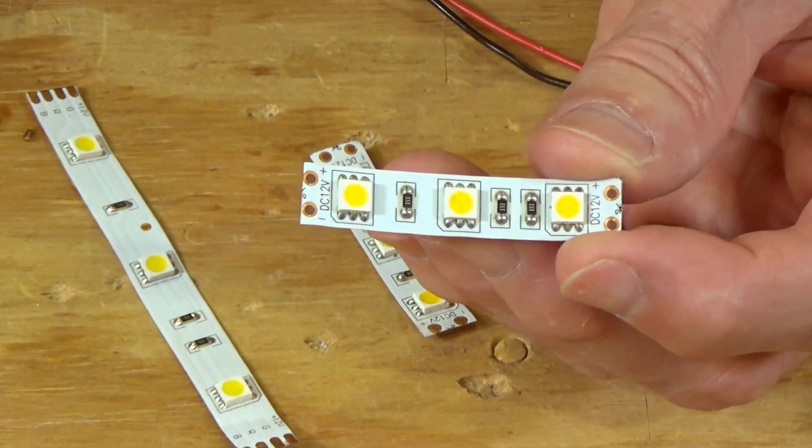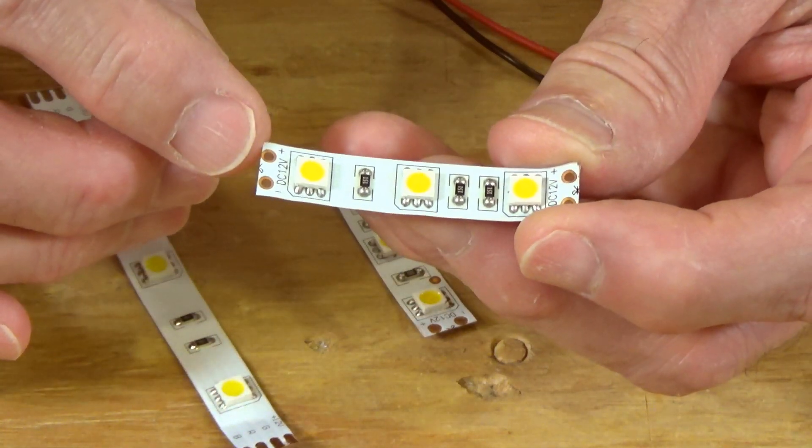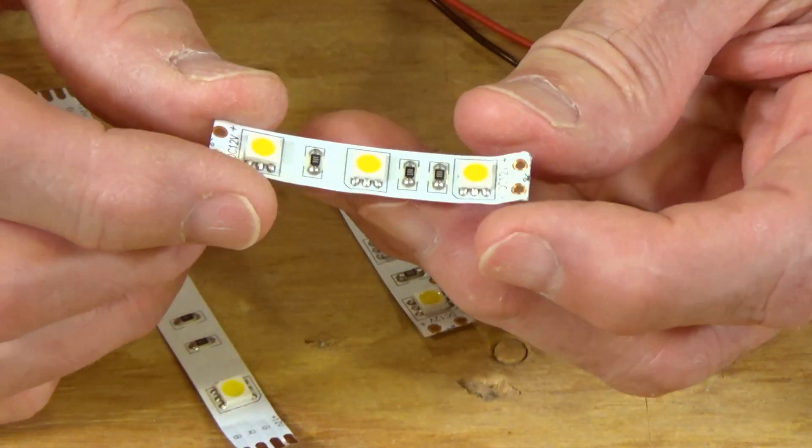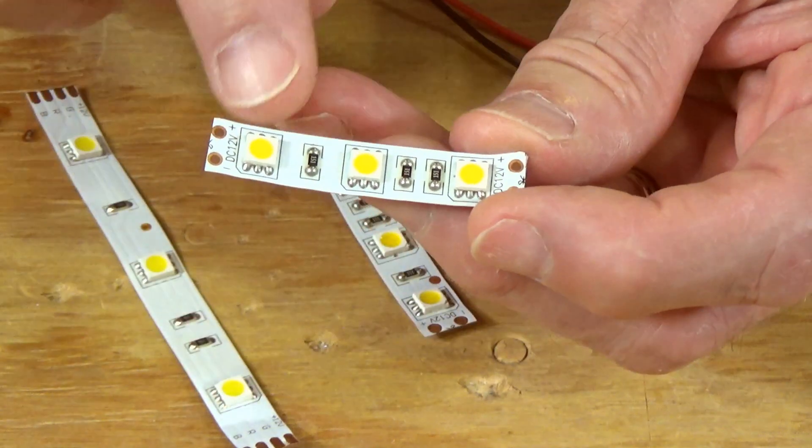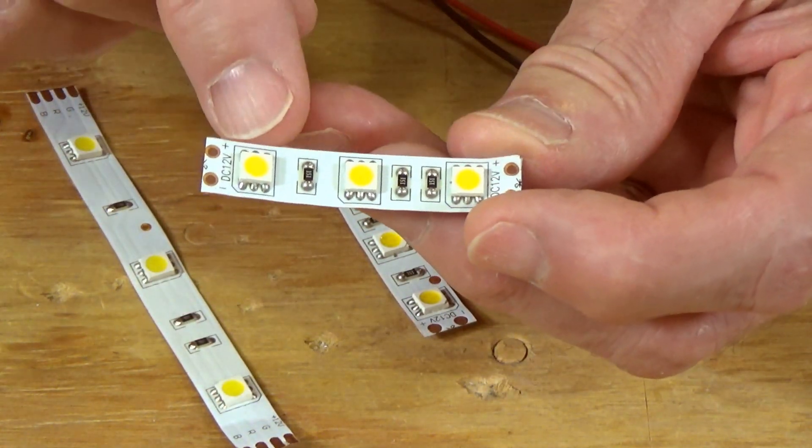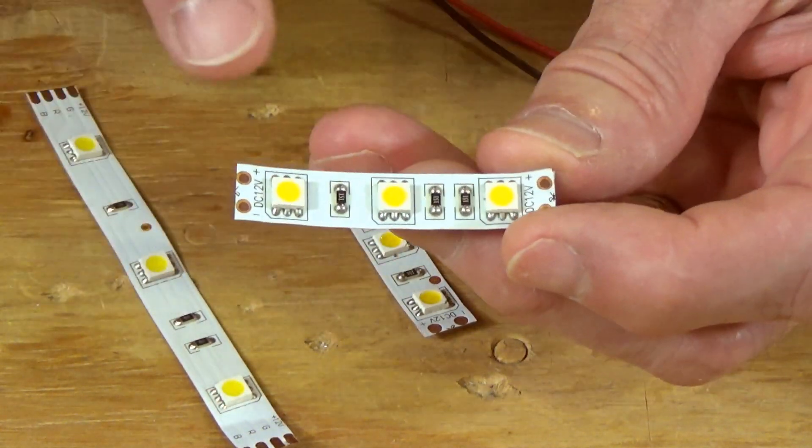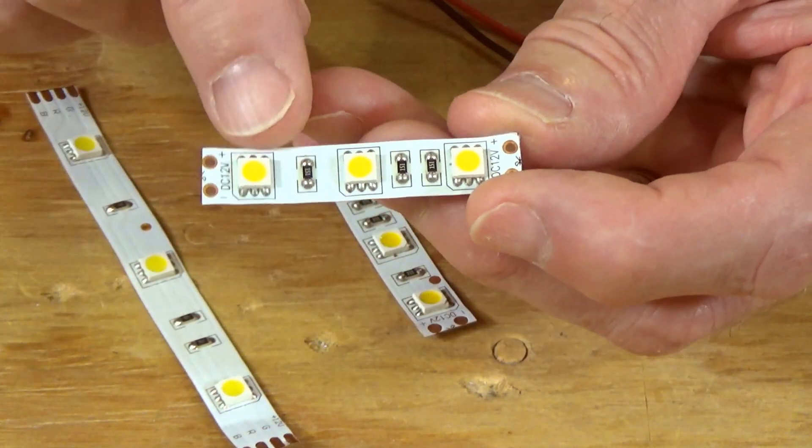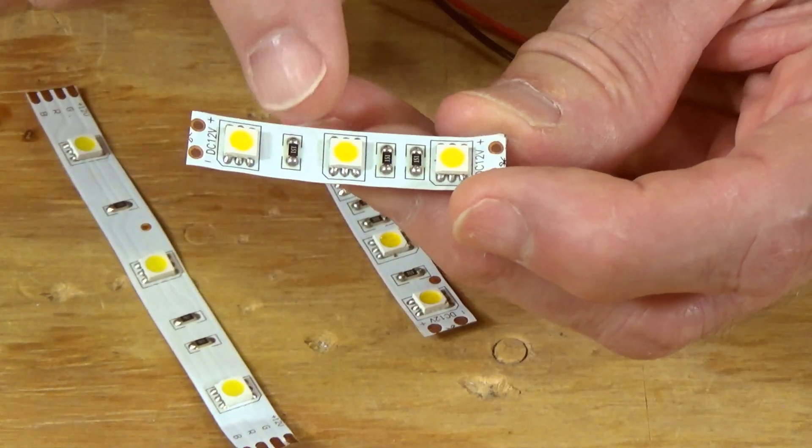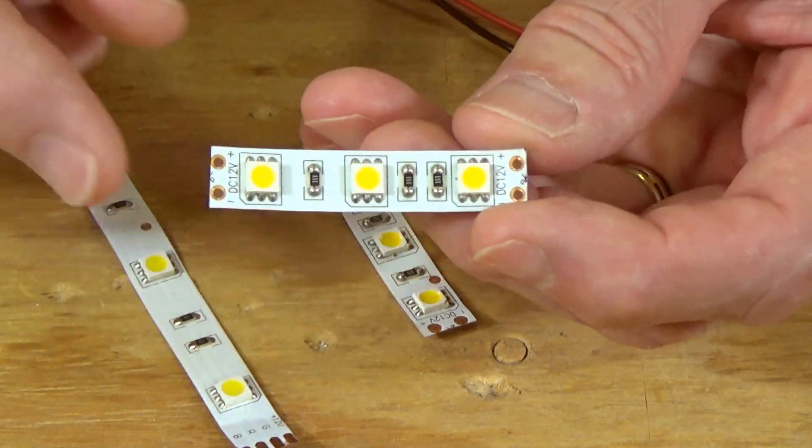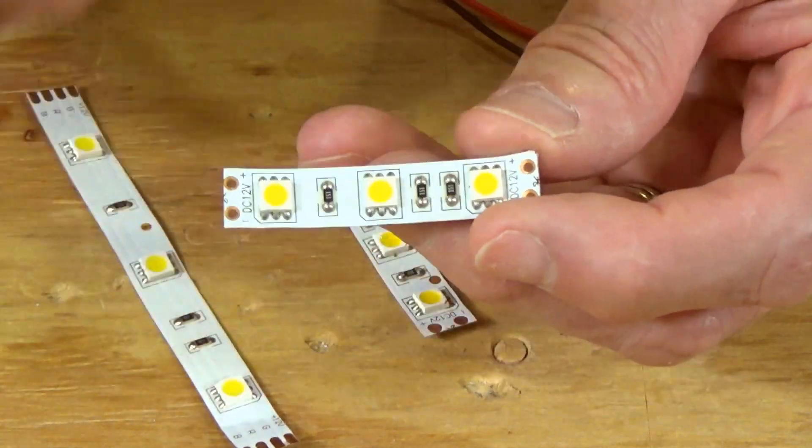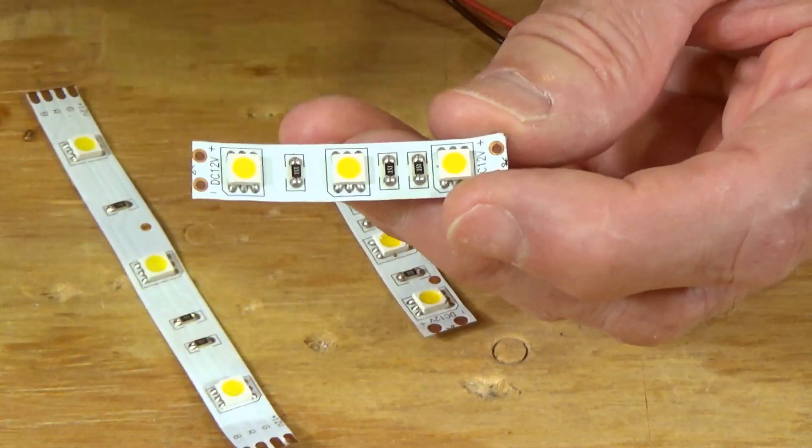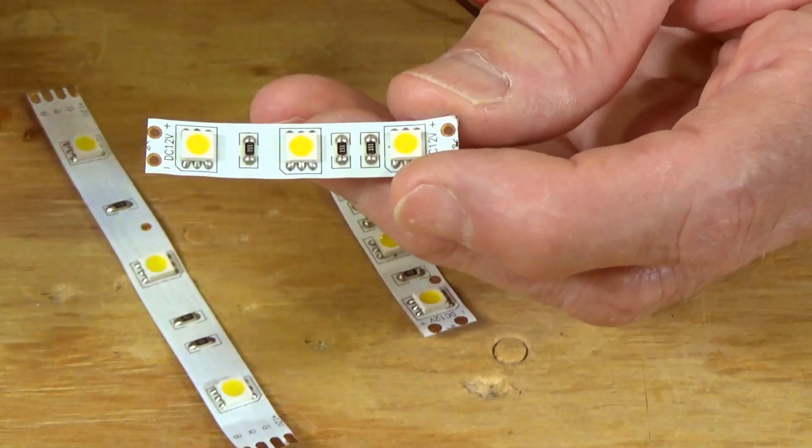The nice thing about this is it's marked as positive and negative, so the polarity is taken care of for you. You've got these 50 by 50 LEDs—that means they're five millimeters by five millimeters. They're nicely equally spaced out here with a resistor to drop the voltage and the current down to what these individual LEDs need. That is very important to remember when you start installing these.